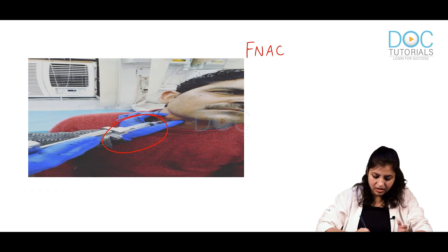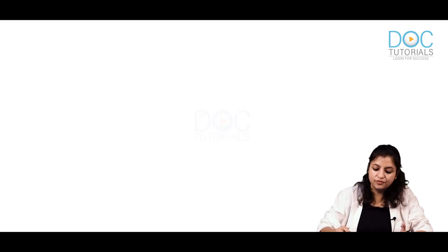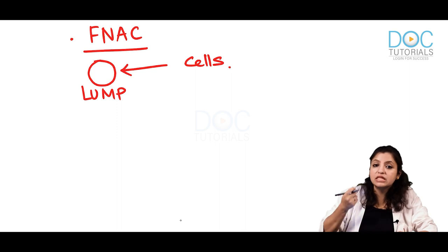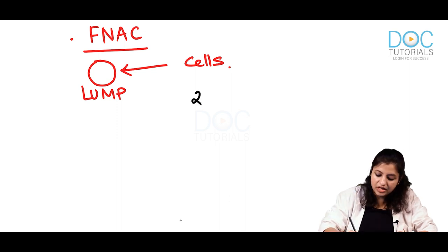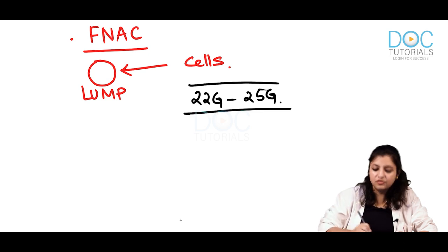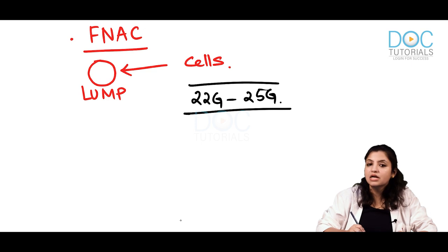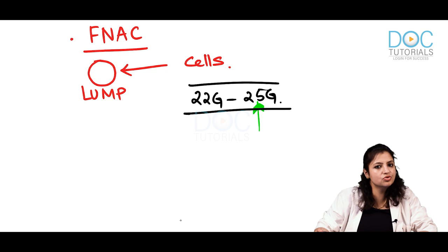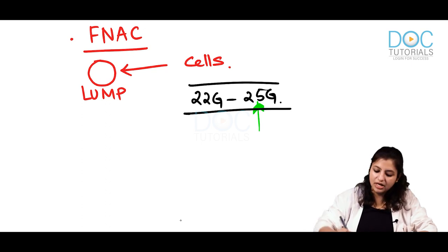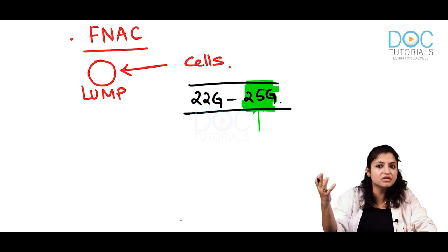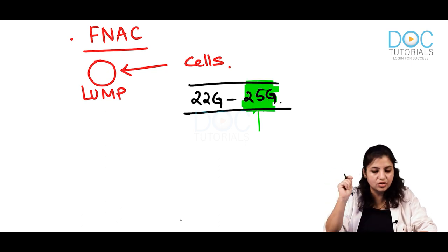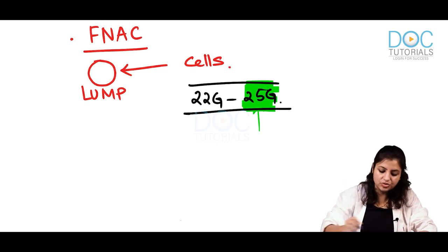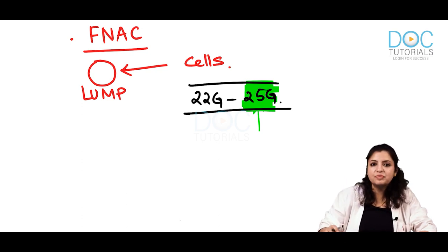Regarding the gauge size used for FNAC, we use thinner needles ranging from 22 gauge to 25 gauge. 25 gauge needles are usually used for thyroid lesions because they are very vascular. The more vascularity you expect, the thinner the needle you use. Note: the bigger the gauge number, the thinner the needle. So a 25 gauge needle is a very thin needle.